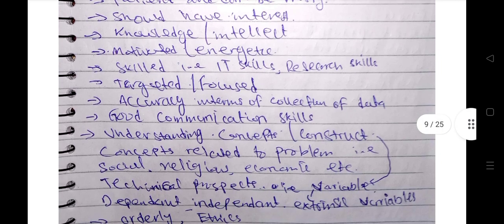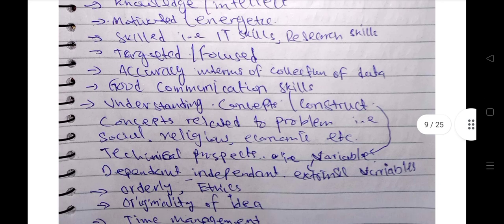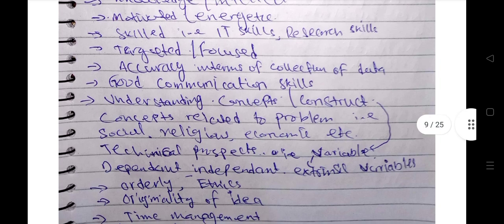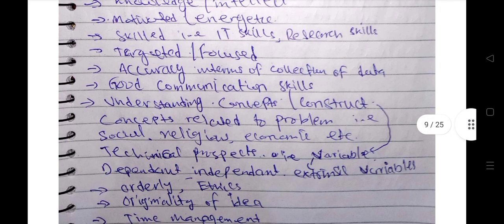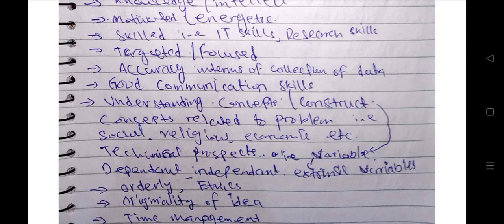Research is a very concise, step-by-step, focused, systematic and controlled thing, controlled process or phenomena. So you have to maintain that focus in your research. Next quality is accuracy in terms of collection of data and good communication skills. You have to deliver, you have to communicate with different people to gather data, so you must have amazing communication skills.